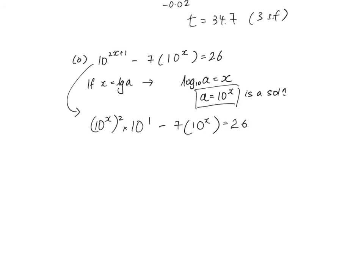And I know that since a equals to 10 to the power x is a solution, I can replace this as a, I can replace this as a. I would have a squared multiplied by 10 minus 7a equals to 26.